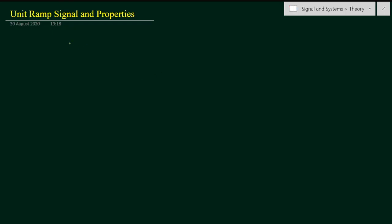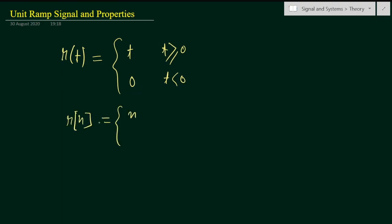In this video we will see what is a unit ramp signal and its properties. It is denoted by r(t). This r(t) is equal to t for t greater than or equal to zero, and zero for t less than zero. Similarly, for the discrete time sequence, r(n) equals n for n greater than or equal to zero, and zero for n less than zero. These are the two formulas for the unit ramp signal and unit ramp sequence.